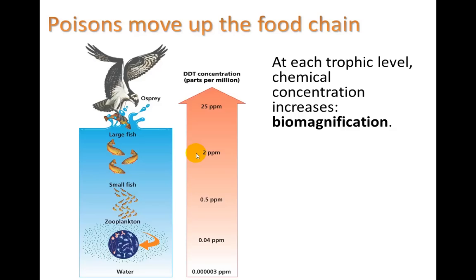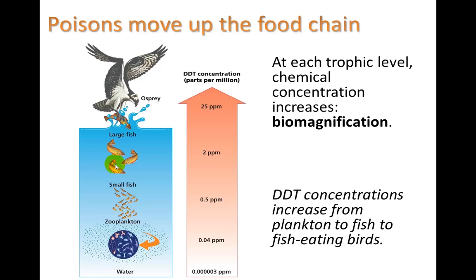This is one of the reasons why the condor became so vulnerable to DDT in the environment — because they are very high on the food chain, they ended up bioaccumulating large concentrations of DDT.